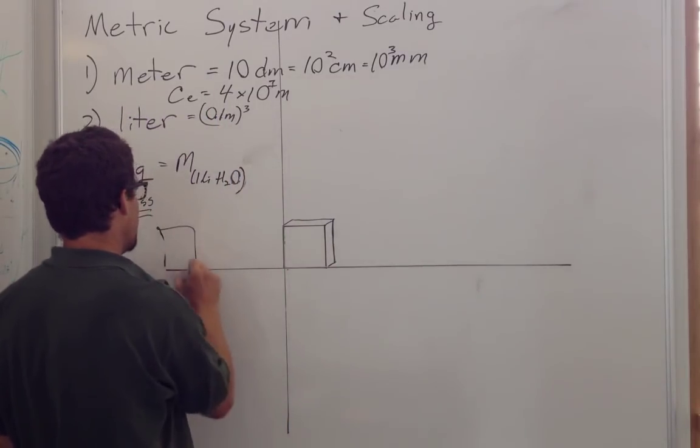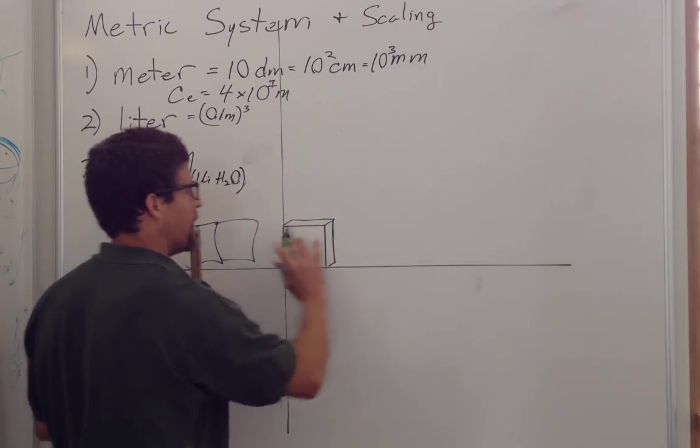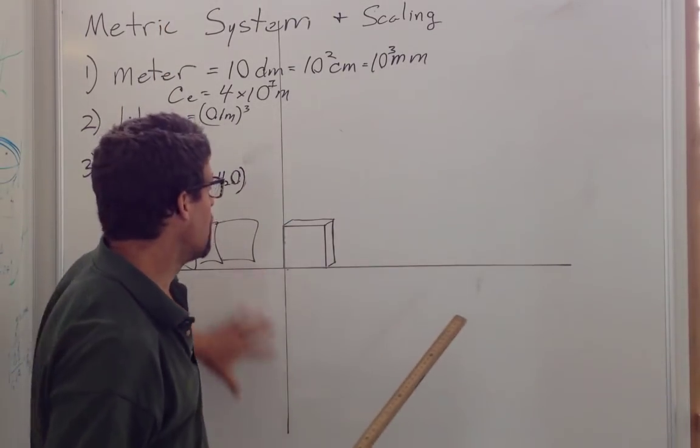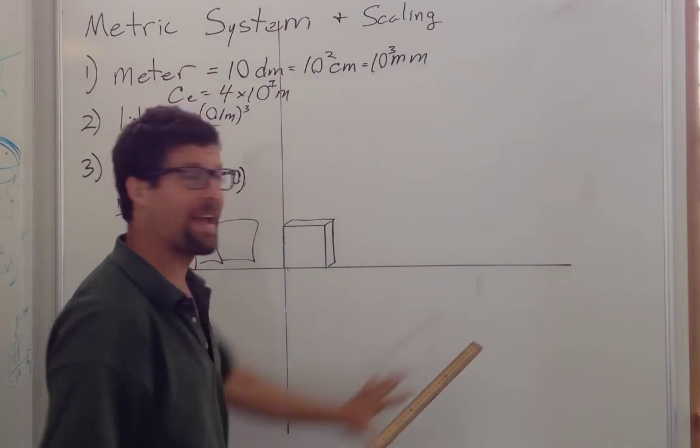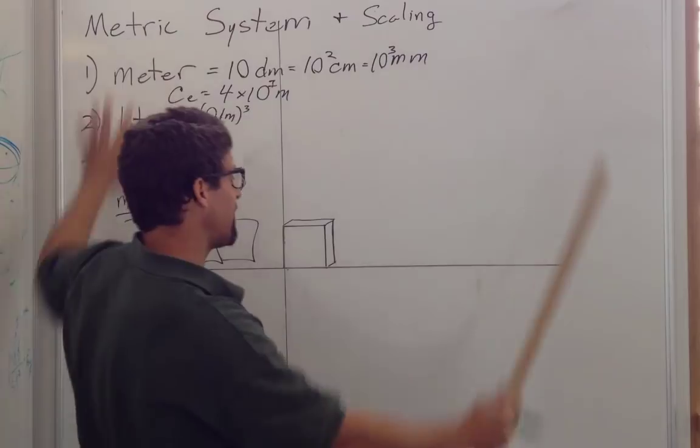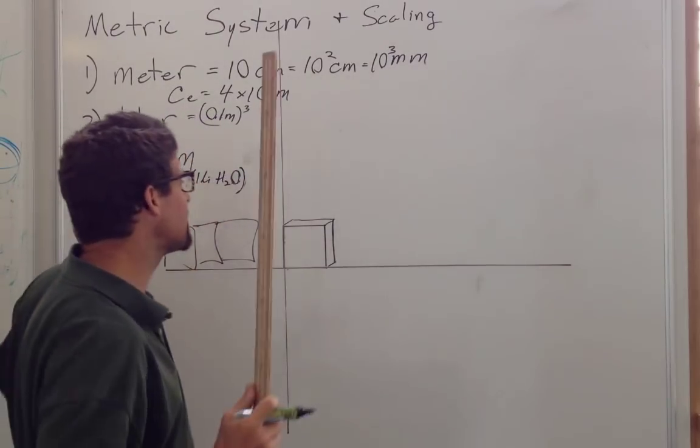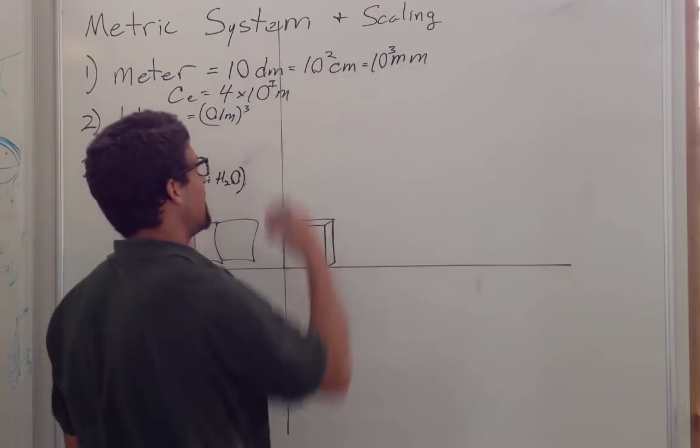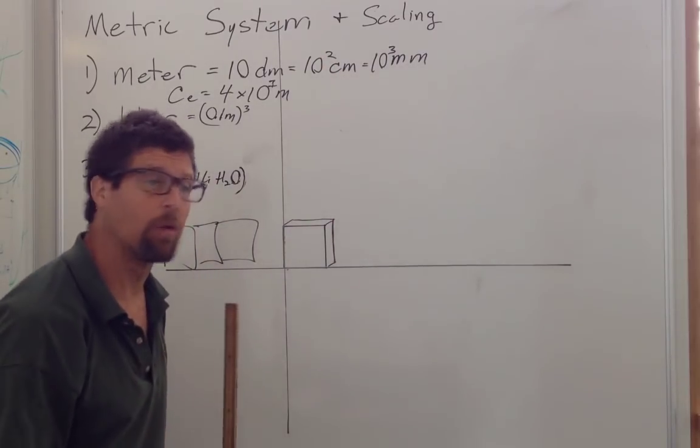So we'd have 10 of these times 10 high, that would be 100. So the surface area would grow by a factor of the length squared. It would be 100 times the surface area, plus it would be 10 units deep. So it would be 10 times 10 times 10, or 1,000.